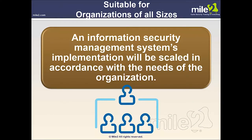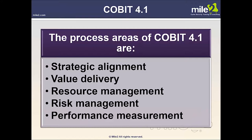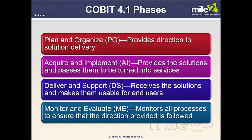ISMS implementation must be scaled in accordance with the needs of your organization — whether a 10-person office or a 10,000-person organization. COBIT 4.1 process areas include strategic alignment, value delivery, resource management, risk management, and measuring performance and compliance. COBIT has several phases: plan and organize, providing direction to solution delivery; acquire and implement, providing solutions to be turned into services; deliver and support, making solutions usable for end users; and monitor and evaluate, ensuring that the direction provided is actually followed.